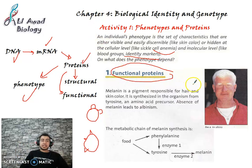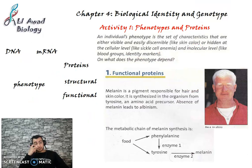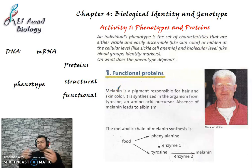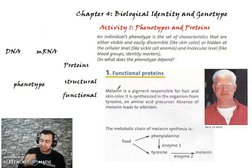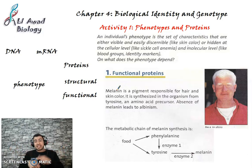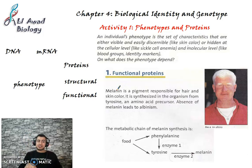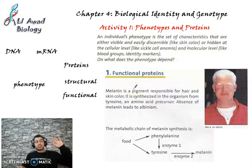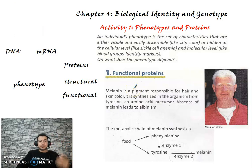Let's talk about melanin. Melanin is a pigment found inside your cells — hair cells, skin cells, and eye cells. It is a dark pigment, and it gives us the black color. The higher the concentration of melanin in the skin, the darker the skin. Melanin also protects us from sunlight — that's why it becomes darker during tanning. Melanin is responsible for hair color, skin color, and eye color.